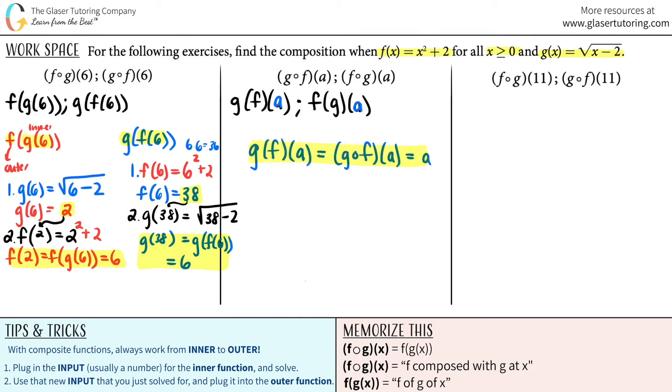And then what about the second part? F of g of a, which is the same thing as f composed with g at a, would be a. There you go. And let's see if we can make that assumption for the next part.